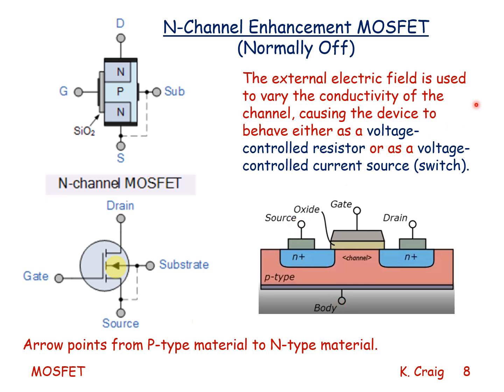The external electric field is used to vary the conductivity of this N-type channel, causing the device to behave either as a voltage-controlled resistor or as a voltage-controlled current source. This is a voltage-controlled device as no current flows from the gate into the MOSFET. The dashed line and the direction of the arrow indicate this is an N-type enhancement mode MOSFET.